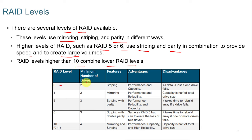RAID 0 requires at least two drives and uses striping, giving performance and capacity but losing all data if one drive fails. RAID 1 uses mirroring. RAID 5 uses striping with parity. RAID 6 uses striping with double parity — same as RAID 5, but it can tolerate the loss of up to two drives, providing even more redundancy. Rebuilding the array after drive failure does take time.